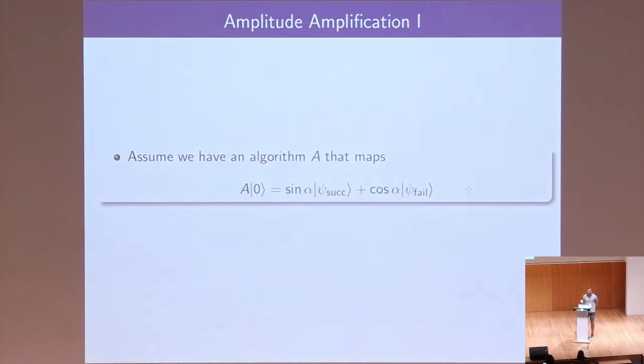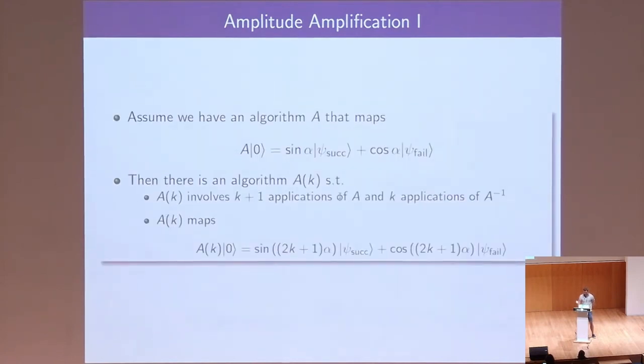The most important and basic tool we use is amplitude amplification, of course. In its basic form, amplitude amplification works like this. Suppose we have a unitary mapping some initial states to a state which consists of the good part, the successful part, the part we want, and some remaining called the bad part. And typically, the amplitude of the good part is small. So, we wish to amplify it to make this probability to measure a state from this part large.